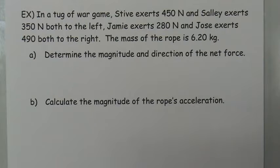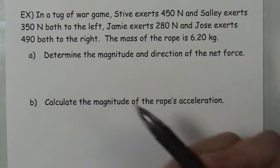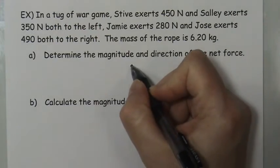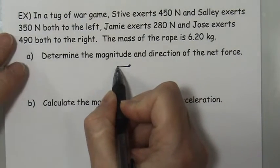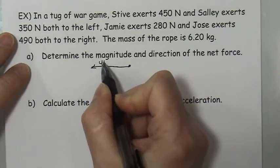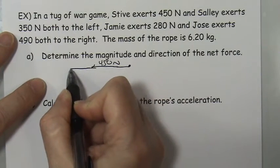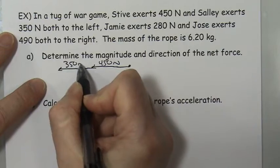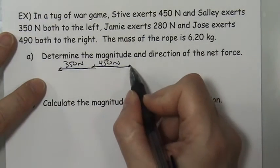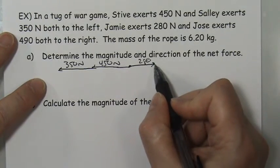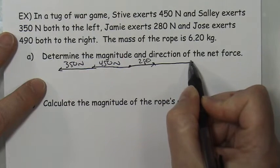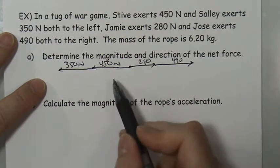In this first problem, let's calculate the actual amount of the net force — the amount of the imbalance. Let's draw the free body diagram showing these four forces: 450 Newtons to the left, a slightly shorter arrow representing 350 also to the left, an even shorter arrow for 280, and then Jose is now going to exert 490 Newtons. They look pretty close to being balanced.